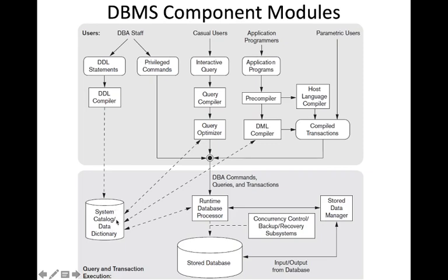All that information will be stored in the system catalog or data dictionary. When the DBA staff executes DDL statements, they are compiled by the DDL compiler, which stores all data structure information such as size of files, names, data types of items, storage details of files, mappings, information of schemas, and constraints on the database.